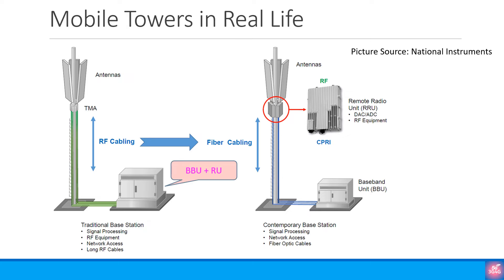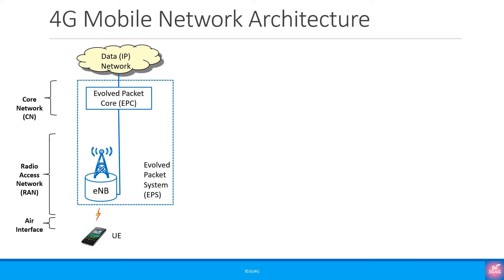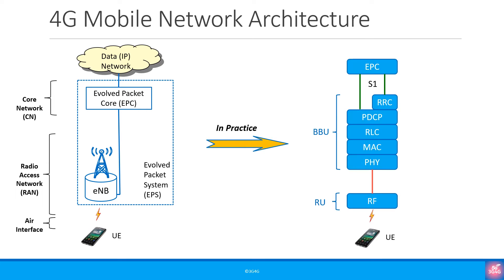In 4G you would never see the traditional base station, but you can have an integrated base station. Starting with the high-level 4G mobile architecture, in practice the eNodeB consists of a BBU or baseband unit and a radio unit or RU. The RU is also called the RRU or RRH — remote radio unit and remote radio head respectively. The reason it is referred to as remote is because it is on top of the tower.